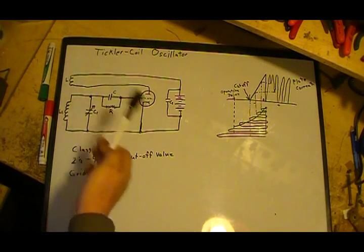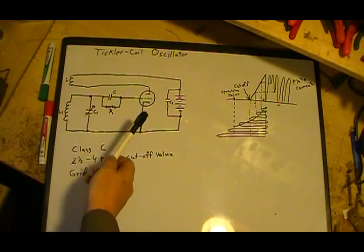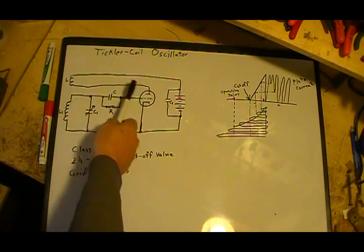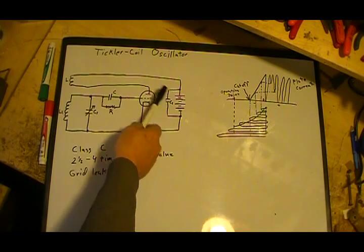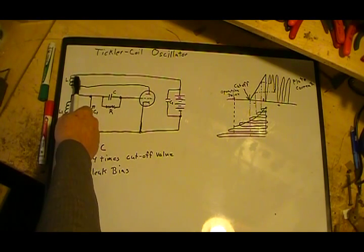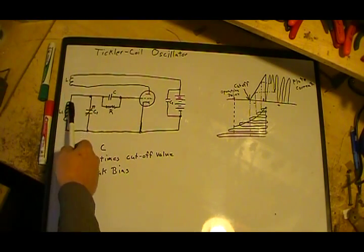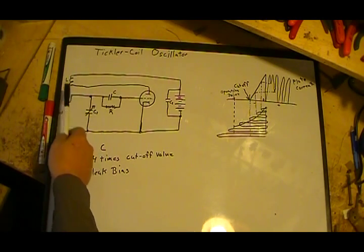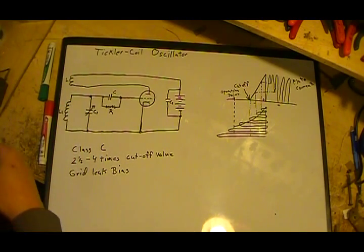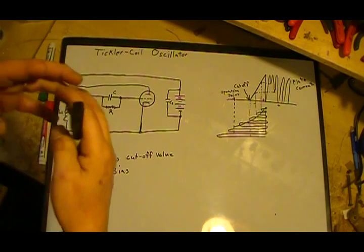A field will start being developed, an expanding field around L1. Now L1 and L are wound more or less as a transformer. One coil pretty much sits over top of the other one.